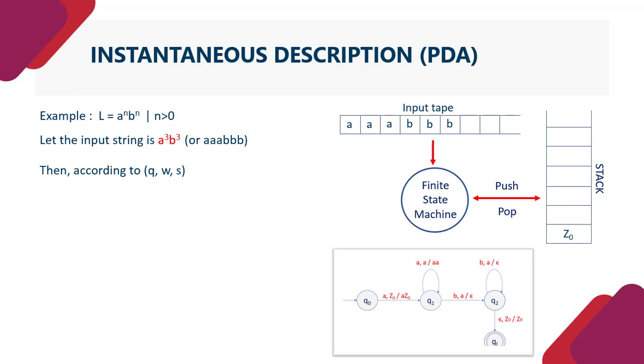Then according to Q, W and S instantaneous description, if we define it: Q0, we have initially string AAABBB and stack we have Z0. But when we go to Q1, then there should be something in stack. So stack has A, Z0.